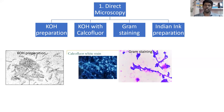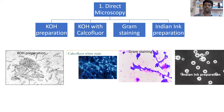The last method in direct microscopy is Indian ink staining, also called negative staining. We stain the background of the slide to visualize the capsule of capsulated yeast cells. The best fungus to identify with this method is Cryptococcus neoformans, which can be identified by its capsule visualized using Indian ink preparation.